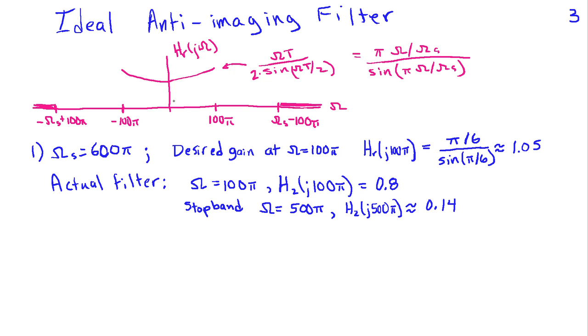So the filter is going to go up from 1 to about 1.05. Now if we look at our actual filter, we know from the previous page that the gain of the actual filter at 100π is 0.8.